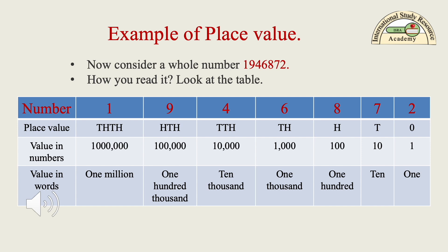Starting the number from the extreme right: digit 2 has place value 1 (ones), digit 7 has place value 10 (tens), digit 8 has place value 100 (hundreds), digit 6 has place value 1,000 (thousands), digit 4 has place value 10,000, digit 9 has place value 100,000, and digit 1 has place value 1,000,000, which is equal to 1 million.